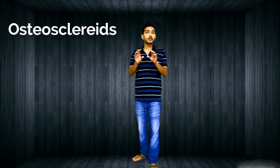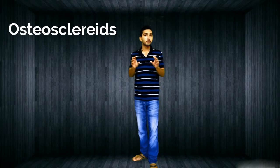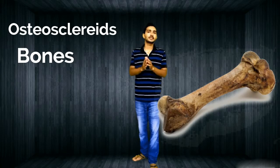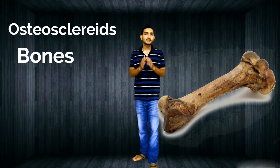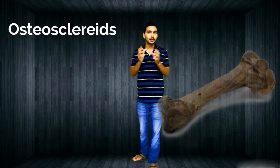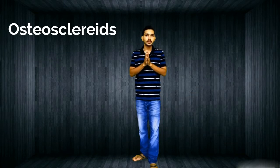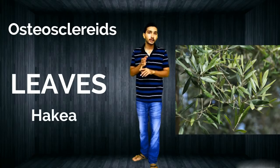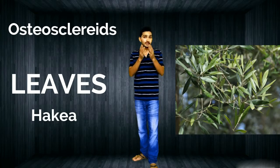Now let's talk about osteosclerids. These are also columnar in shape, but at the ends they are swollen, and they show similarity to a bone — that's why they are named osteosclerids. Examples include leaves of Hakea and leguminous seeds such as Pisum sativum.